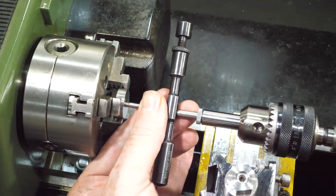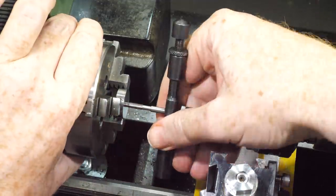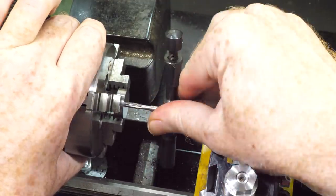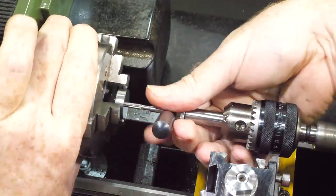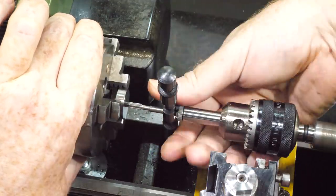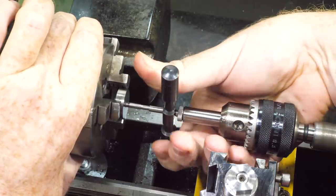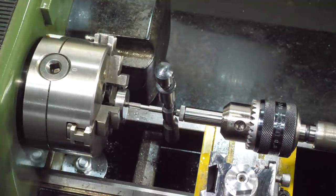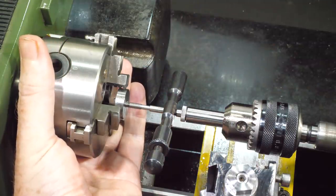Now to try and tap the thread. The shop made tap has never been used in steel before, so I don't really know how well it will work. It seems to cut okay, but it's not easy going. I backed it out a couple of turns to break the chips and added more cutting oil.